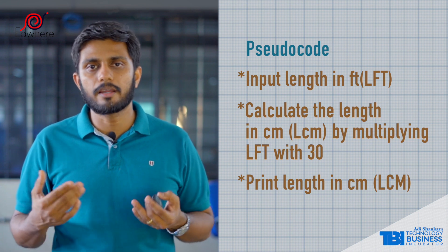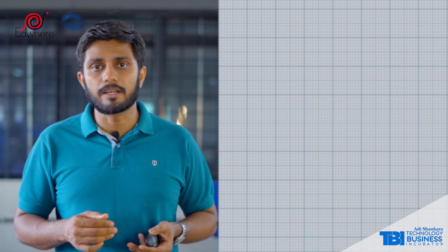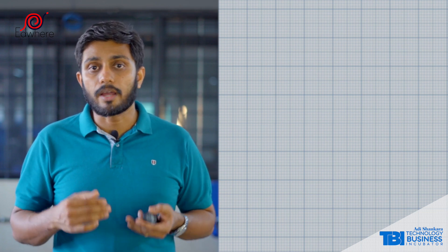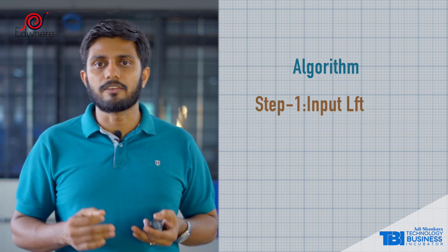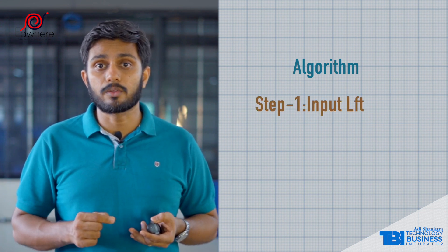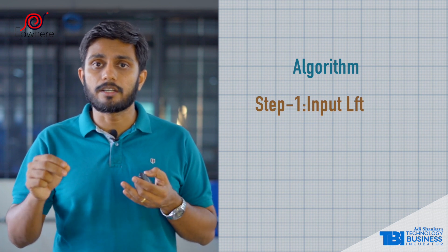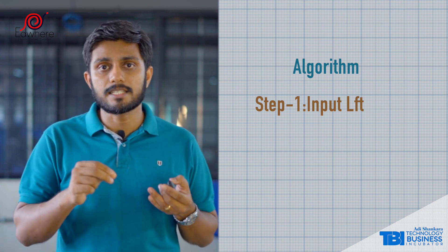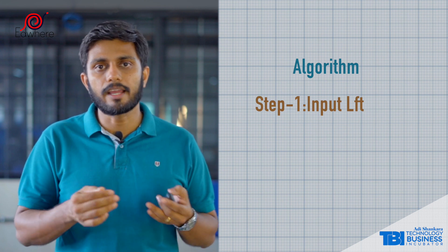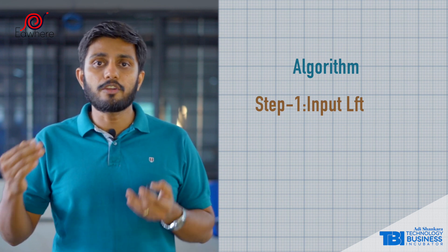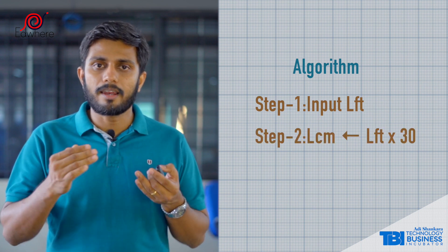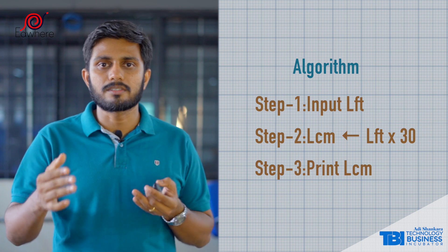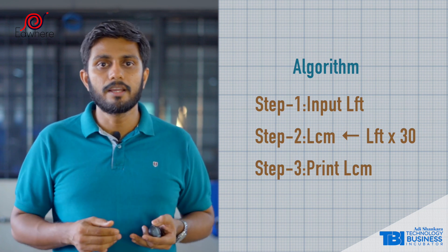If we get to the calculation, we can use it as a pseudocode. If we write it in a step-by-step manner, we can get the algorithm. Step 1: get the value of LFT. Step 2: compute LFT into 30, which means we multiply LFT by 30. Step 3: print the result.